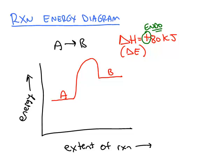Negative delta H means heat is released. That would be a negative 80 kilojoules, let's say. But in this particular reaction, A to B is endothermic, 80 kilojoules. That means the product B is 80 kilojoules higher in energy than the reactant A. Energy is plotted on the y-axis and the extent of the reaction or the reaction progress is plotted on the x-axis.